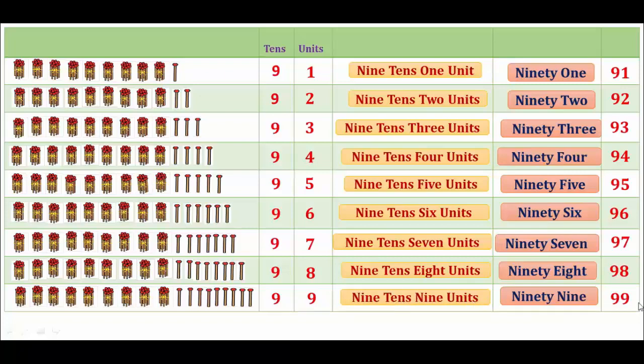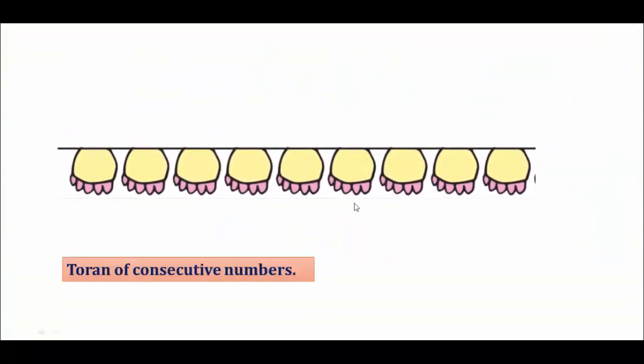Do you understand, students? Yes. Good. Student, look at this. This is a train. Here there are 92, 96.